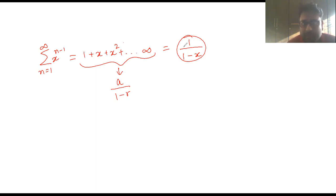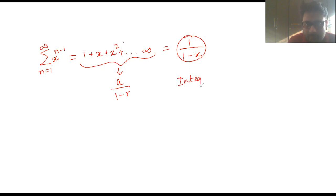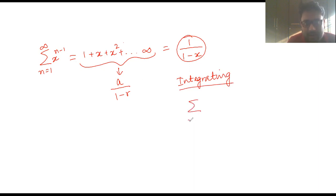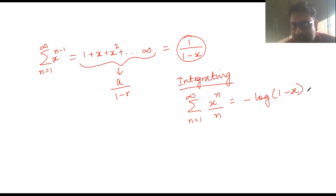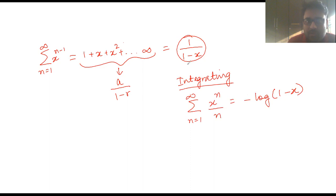Integrating both sides: the left side gives summation from n=1 to infinity of x^n/n, and the right side gives -log(1-x). I didn't take the modulus because x has to be a fraction here. This is a result we will be using.